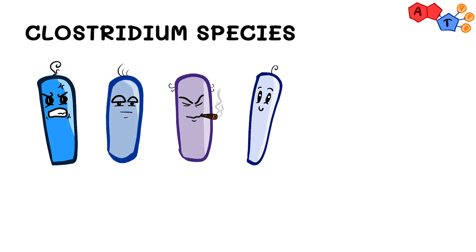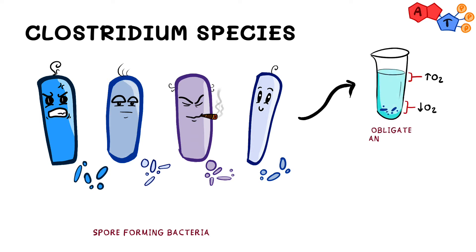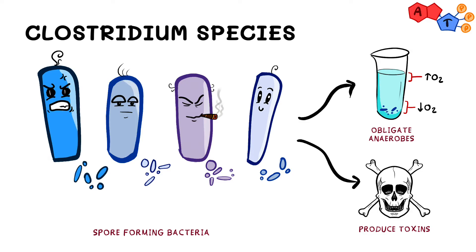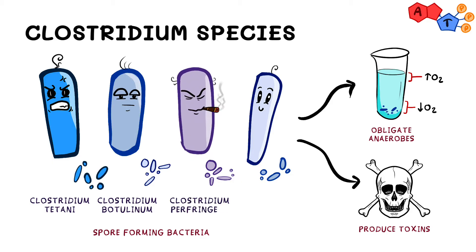Clostridia is a group of bacteria all of whom have three things in common: they all form spores, they all are obligate anaerobes, and they all form toxins. There are four clinically important species: Clostridium tetani, Clostridium botulinum, Clostridium perfringens, and Clostridium difficile.